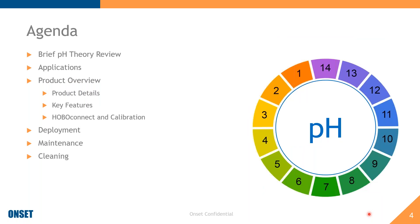Our agenda for today: I will start with a very brief review of what pH is, discuss some applications, cover a quick product overview, dig into product details and key features, and spend a bit of time on calibration — the importance of calibration and how to do it with our new mobile app, Hobo Connect. We'll also talk about deployment, maintenance, and cleaning.